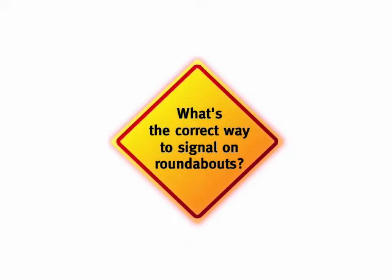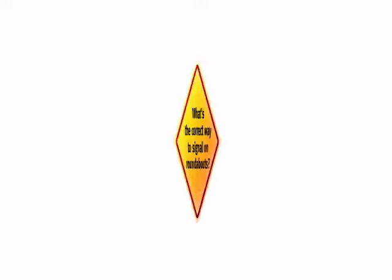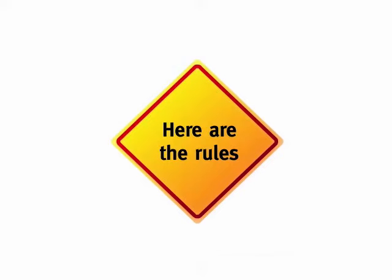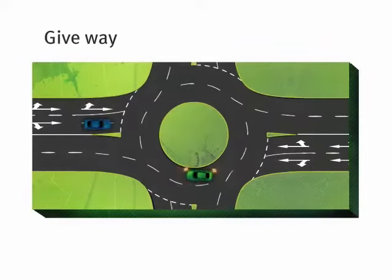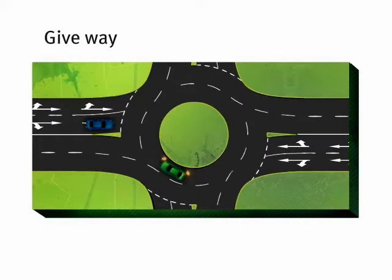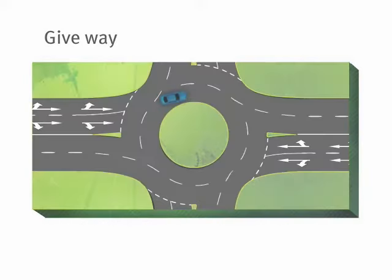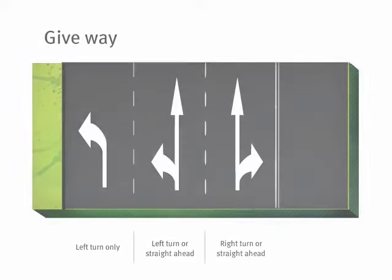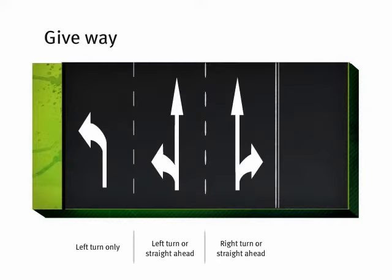Signalling on roundabouts is easy when you know the rules. But here are some tips before you start. Remember, you must give way to any vehicles already on the roundabout before you enter. And if the lanes approaching the roundabout are marked with arrows, make sure you follow their direction.